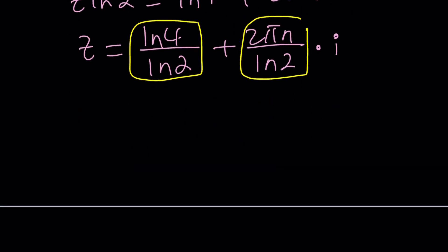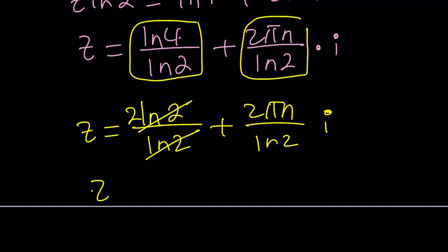One thing I can do with the real part is simplify, because ln 4 is ln 2 squared and it can be written as 2 ln 2, which gives us an awesome result, which is actually a real number without the ln. So it's just 2.